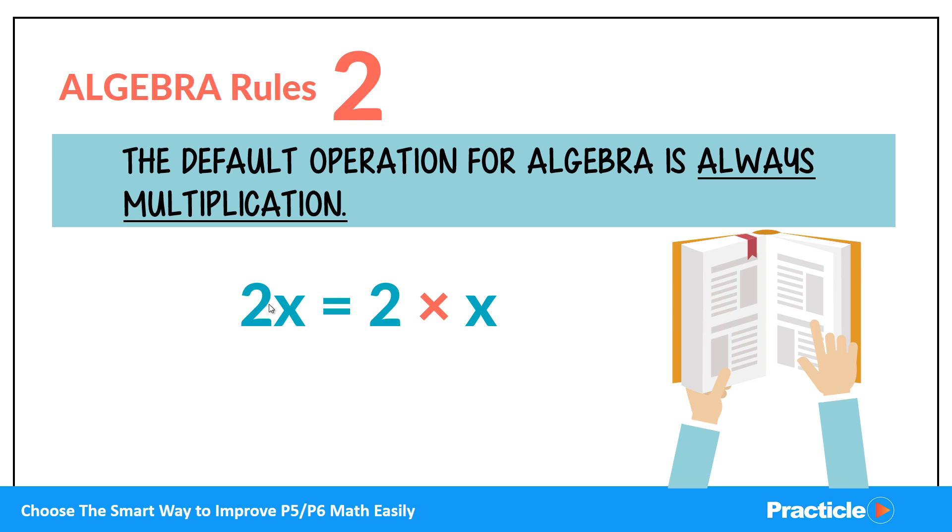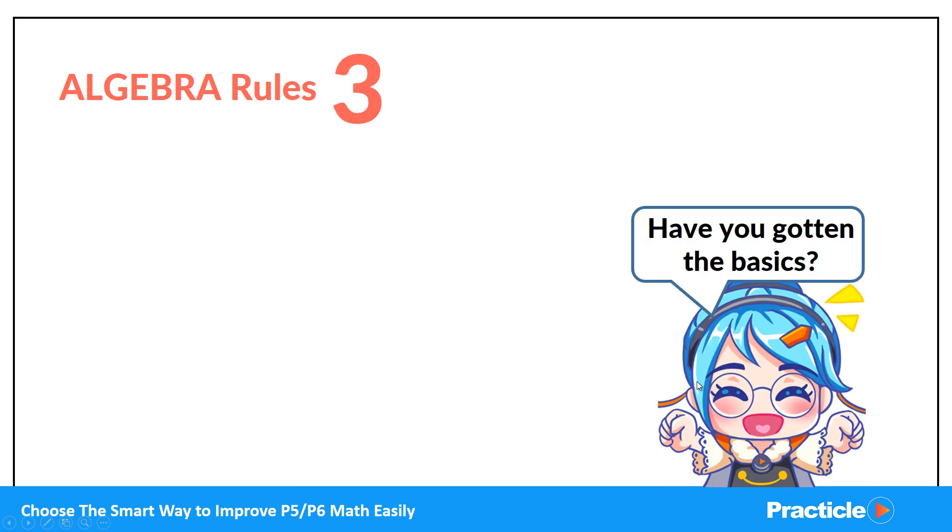So similarly, when we see 10Y, we read it as 10 multiplied by Y. Now, on to the last and final rule. Rule number 3.